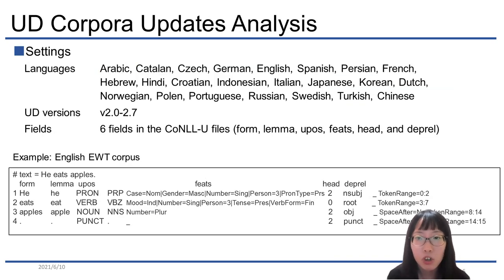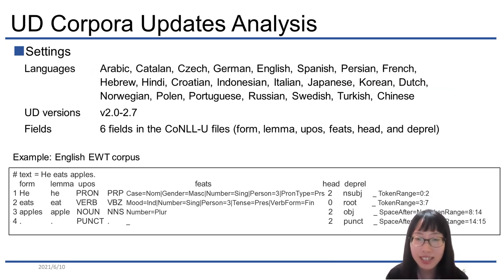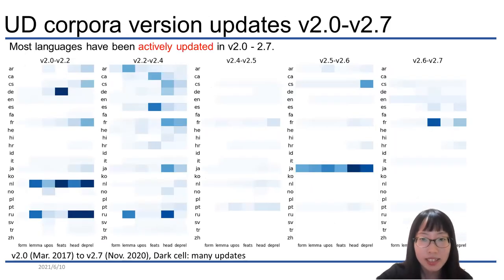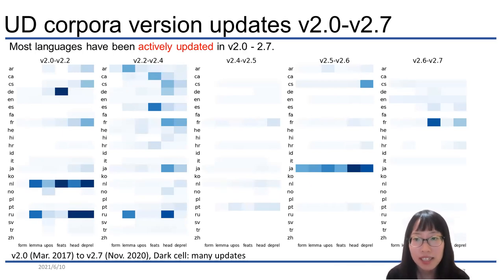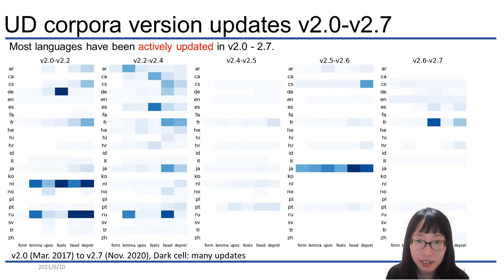We observed updates in the UD corpus for 23 languages, version 2.0 to 2.7. Of the 10 fields in the CoNLL-U file, we examined updates for 6 major fields: form, lemma, UPOS, FEATS, HEAD, and DEPREL. This heatmap shows the UD treebank's updates. The color represents the rate of change from the previous version. When the corpus has been significantly updated, the cell is dark in color. Most languages have been actively updated in version 2.0 to 2.7.